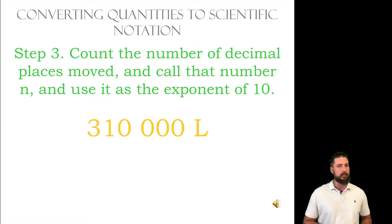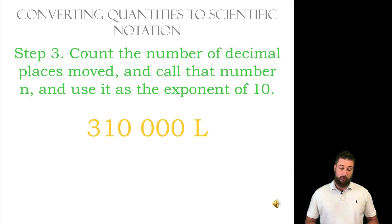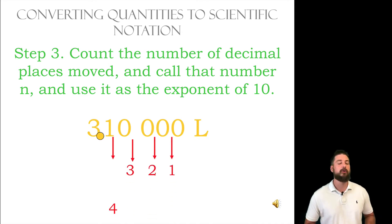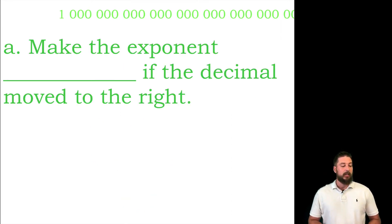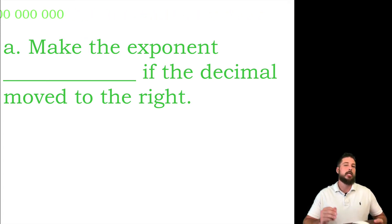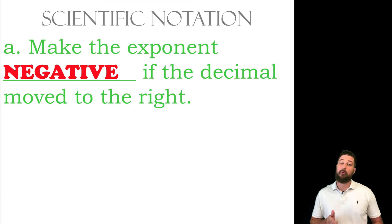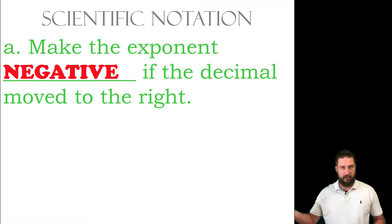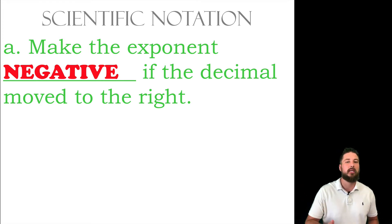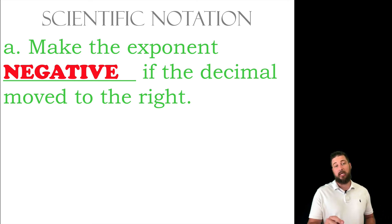Let's go ahead and count the number of times this decimal point moved: one, two, three, four, five. It moved five times, so the exponent of the ten is going to be five. If you have a large number you'll end up with a positive exponent. However, if you have a small number like .000195 it's going to be negative. If you have to move the decimal to the left you'll have a positive exponent, but if you're moving the decimal to the right you'll have a negative exponent.